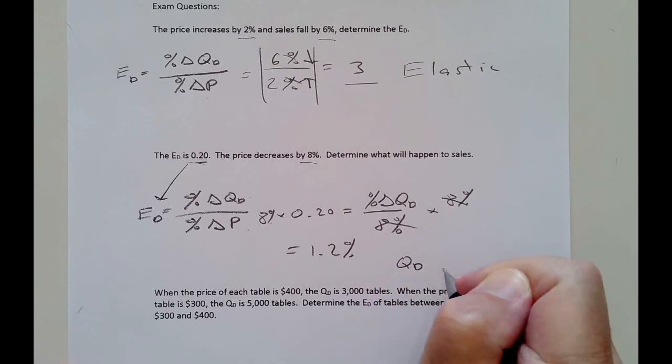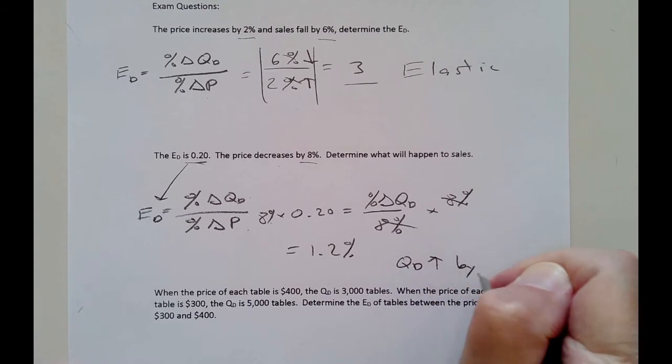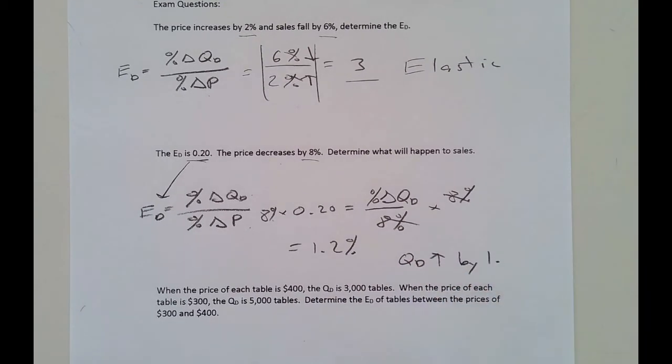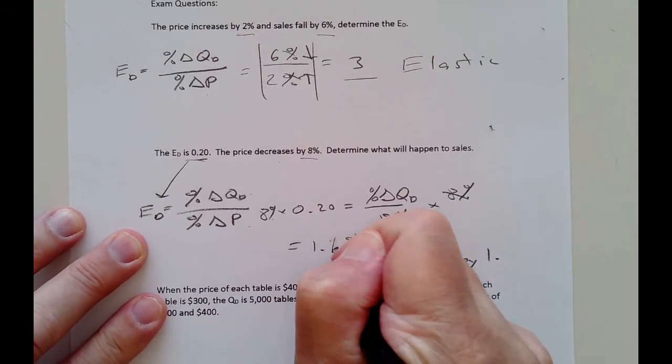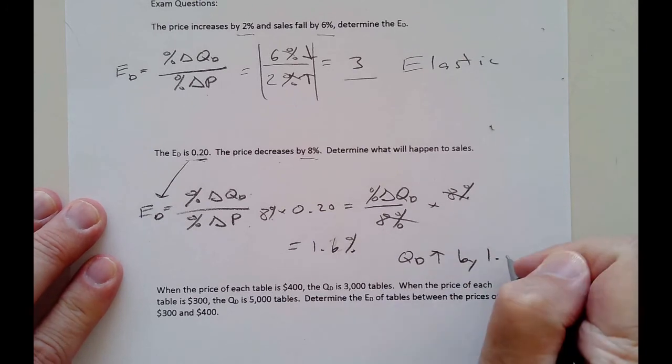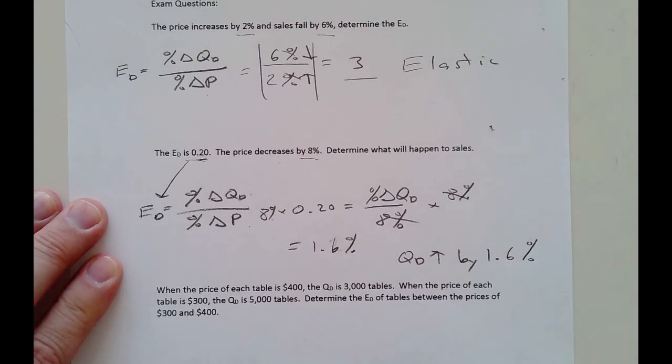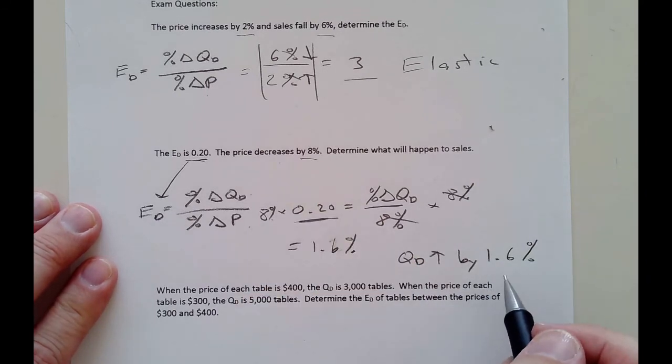You got your calculator, 8 times 0.2 would be 1.2. And it's a percent because you have a percent there. And so this tells me that the quantity demanded is going to change by 1.2%. The price went down, so quantity demanded is going to go up by 1 point... Oops, I made a mistake. I should double check my math. Let's take out 8 times 0.2. And I did make a mistake. I thought it was too low. 1.6. Always check your numbers. And this means that the price goes down by 8%, quantity demanded is going to go up by 1.6%. Which makes sense, because the number is 0.2, highly inelastic.